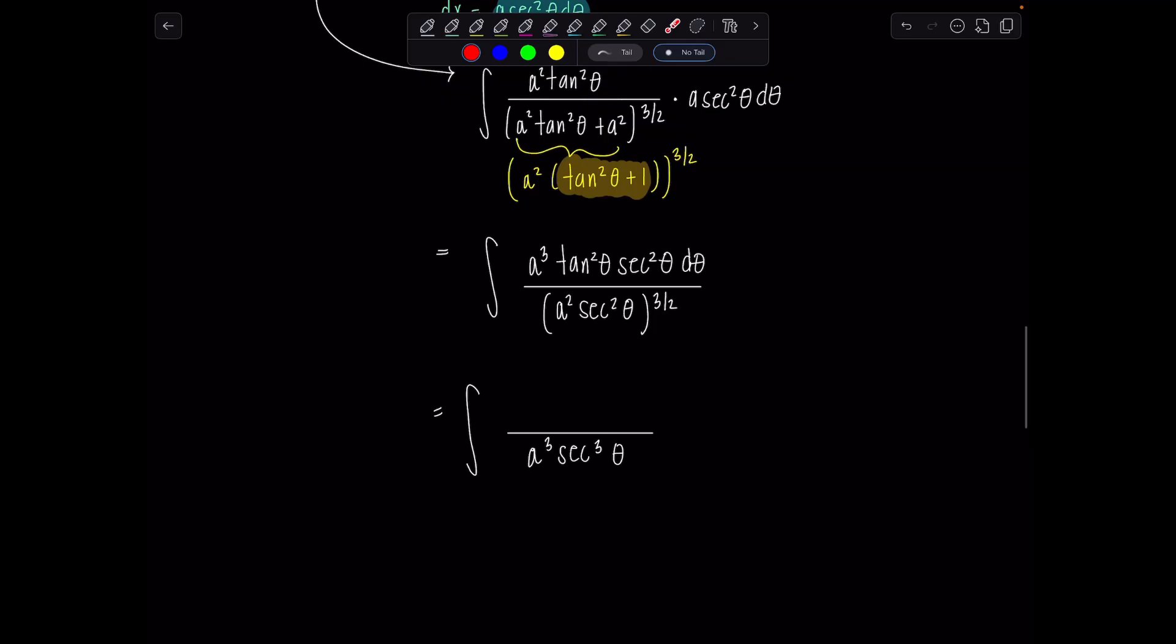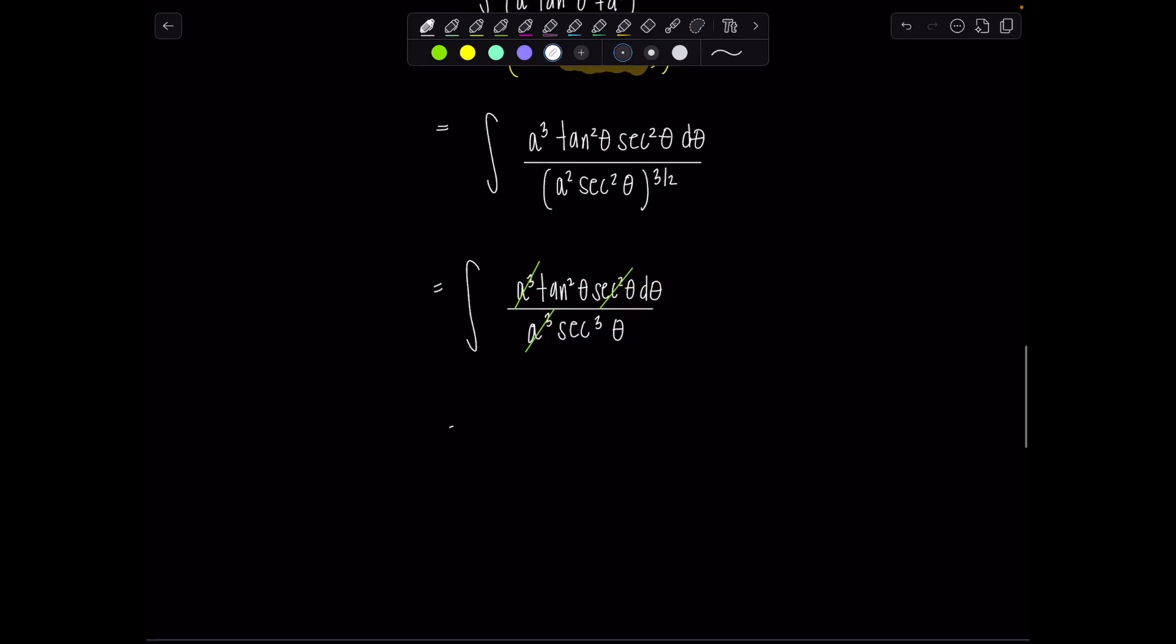Okay, then in the numerator we've got a cubed tan squared theta secant squared theta d theta hanging out. All right, beautiful, we can cancel the a cubed and we can cancel this secant squared out. So then now we just have integral tan squared theta and simply one secant theta in the denominator d theta.